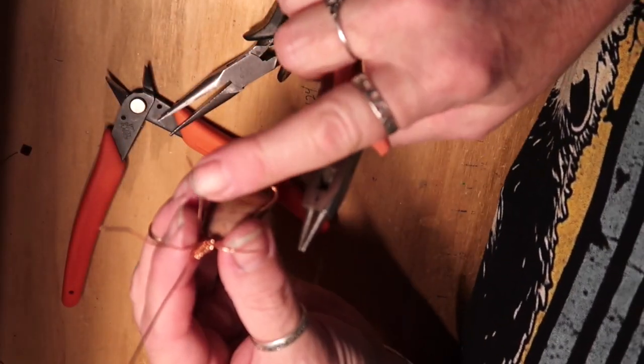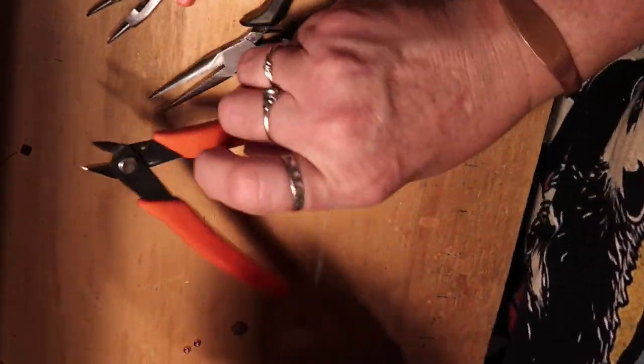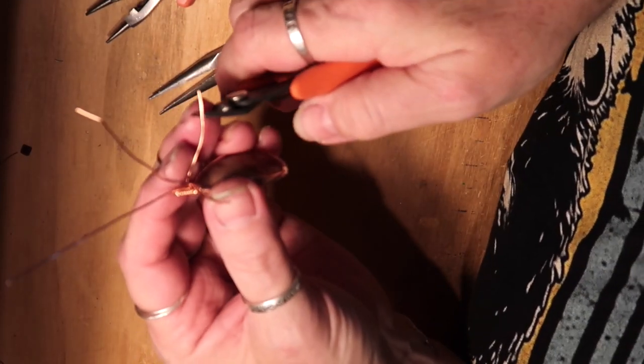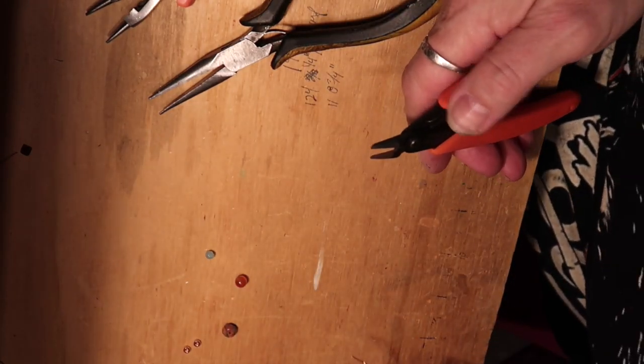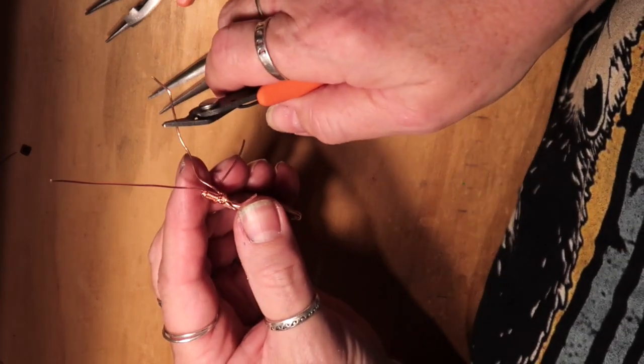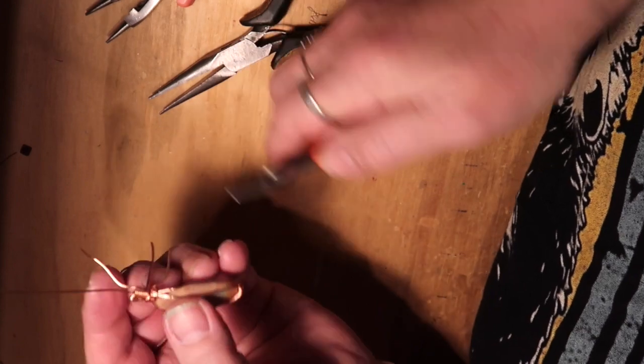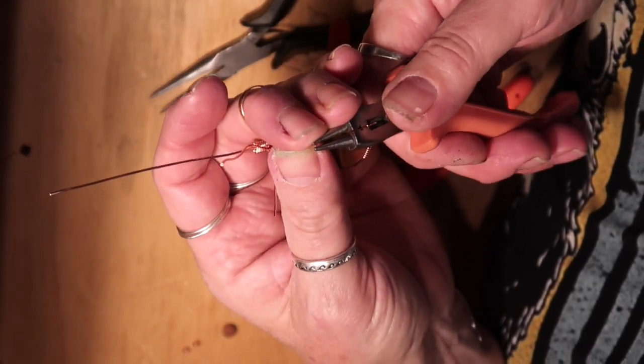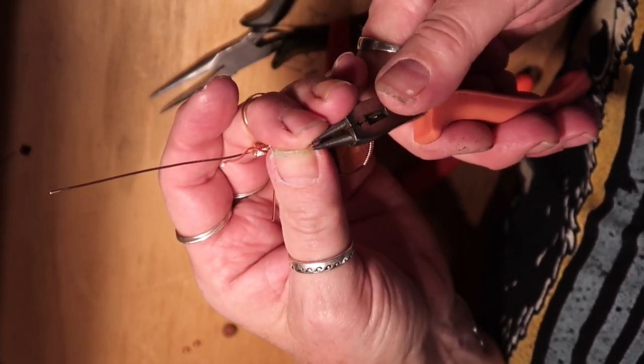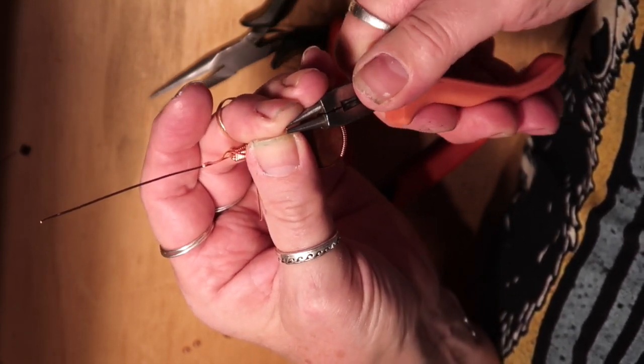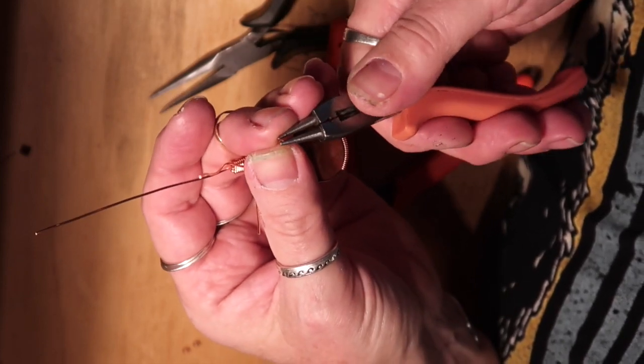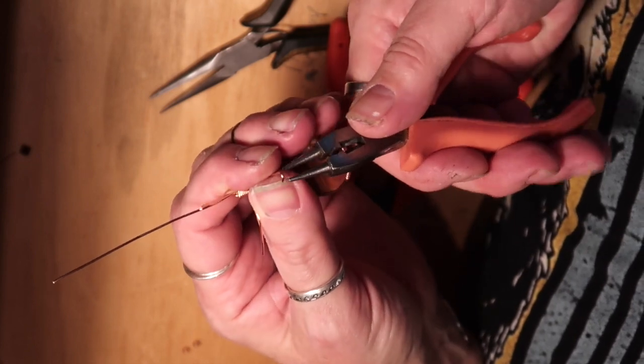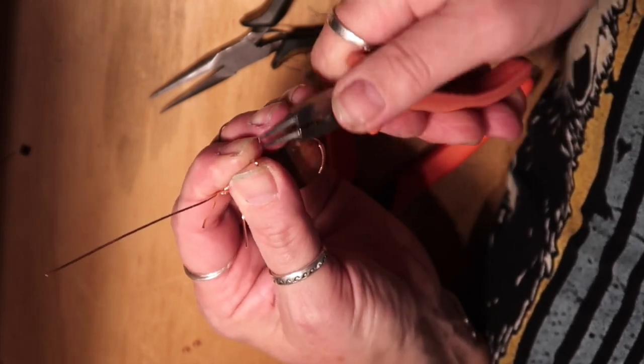And you don't want them this long. So you'll need to adjust and cut them off to where they're about an inch or so long. Roughly take your round nose plier and grab the end. Why is it so hard to get a hold of? Because somebody's watching.